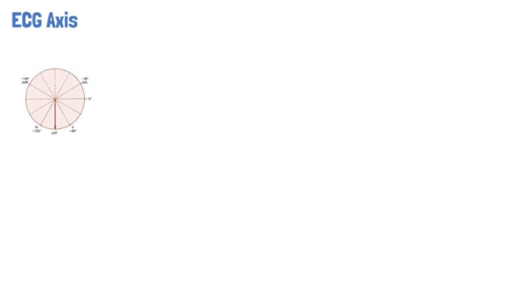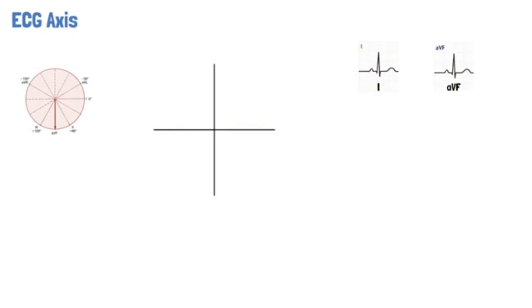The axis of the ECG is the average direction of the overall electrical activity of the heart. While talking about the ECG axis, it is generally the QRS axis that is being referred to. There are several ways of calculating the QRS axis, but the most common is the quadrant method. The quadrant method works by looking at leads 1 and AVF.